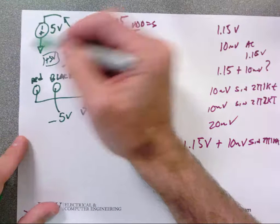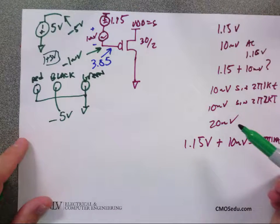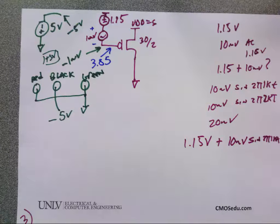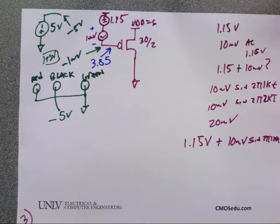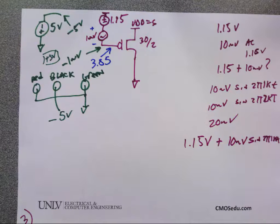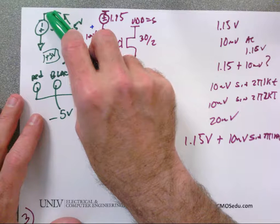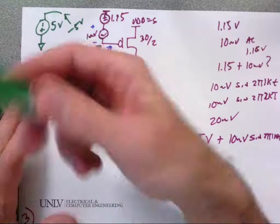It's okay to ground the positive terminal, but not both sides — that shorts the supply. In daily life, cars use negative potential: a 13.5 V battery with the minus terminal grounded. Connect the positive terminal first when jump-starting so electrons have a path. Diesel vehicles, however, ground the positive terminal and use the minus terminal as the supply.